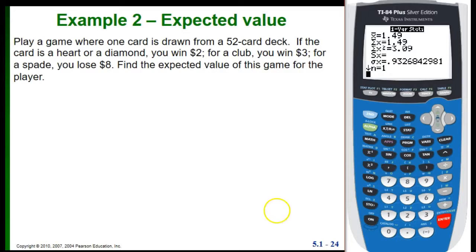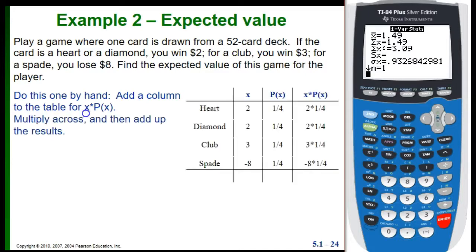And this one has to do with expected value. So this is an expected value for a game. In this game, we're drawing just one card from a regular deck. If it's a heart or a diamond, we win $2. If it's a club, we win $3. If it's a spade, we lose $8. We want to find the expected value. Expected value is the same as the mean. So first, we're going to do this by hand. What this means is that we need to set up our probability distribution table first. And then we're going to add a column to it and do the x times P(x) like we talked about before.